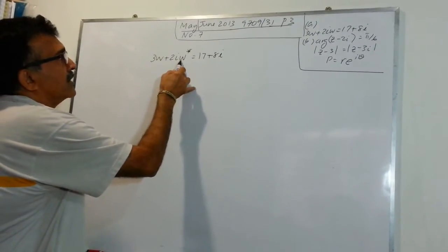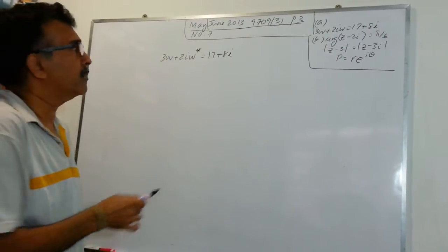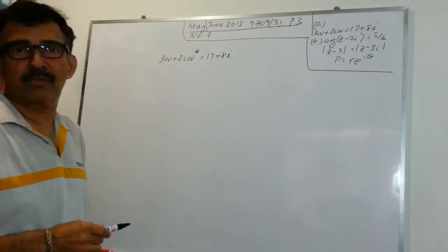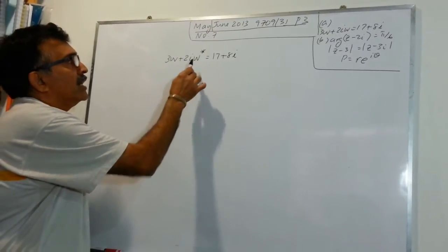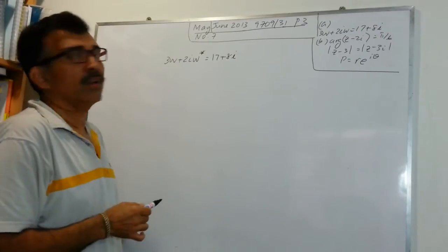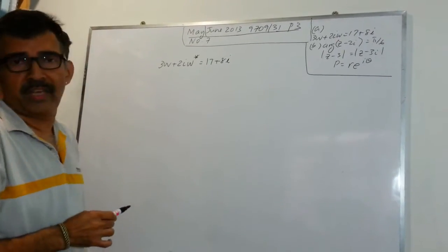I'm going to refer to this as W star. In mathematics, we call this W asterisk, but let's just call this, for simplicity, W star. What is W star? W star is the conjugate of W. So we have to solve this equation without using a calculator.